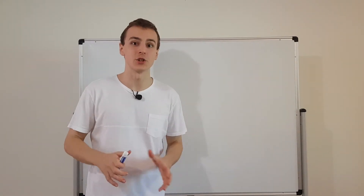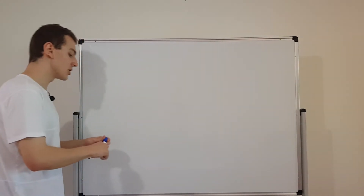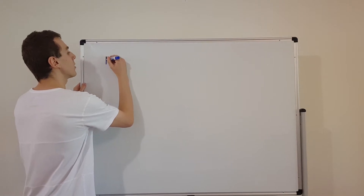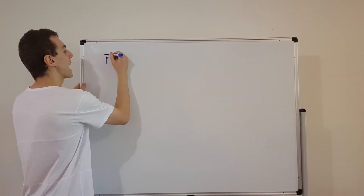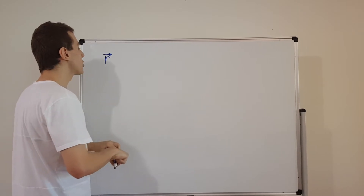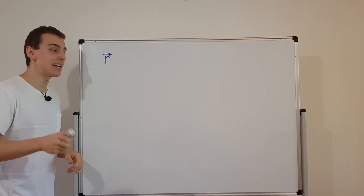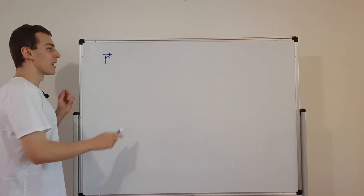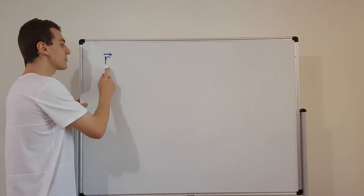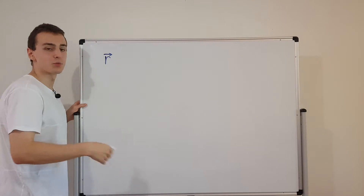So let's start off with position. I'm going to write position using this notation. We're going to have r represent position, and I'm going to put an arrow above to signify that it is a vector quantity.